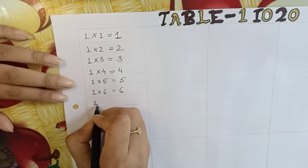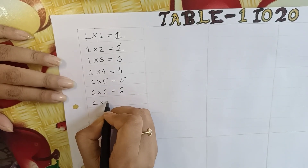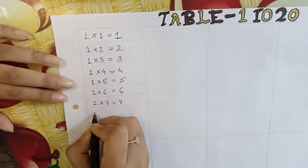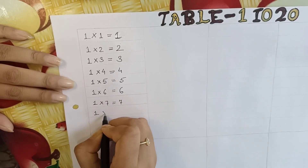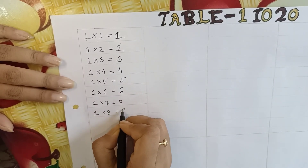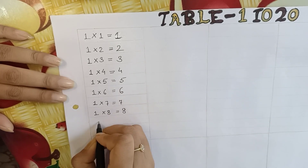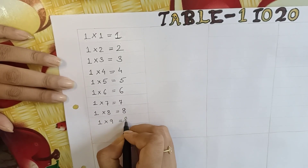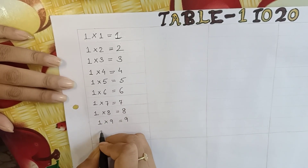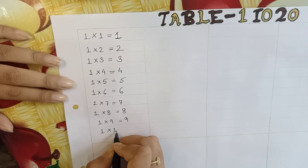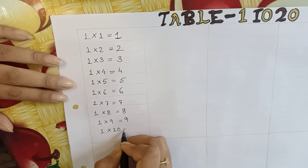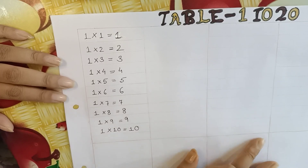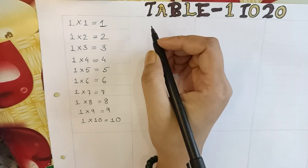1 into 7 is equal to 7. 1 into 8 is equal to 8. 1 into 9 is equal to 9. 1 into 10 is equal to 10. 1 is multiplied by itself.